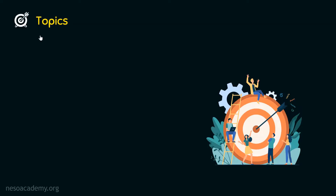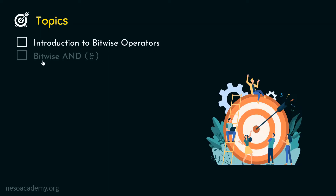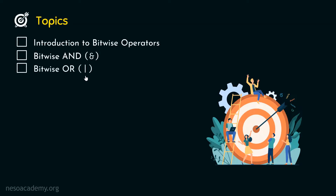In this presentation, we will understand the following topics. The first topic is introduction to bitwise operators. The second topic is bitwise AND operator, which is represented by the ampersand symbol. The third topic is bitwise OR operator, which is represented by the pipe symbol. Let's start with the first topic, that is introduction to bitwise operators.